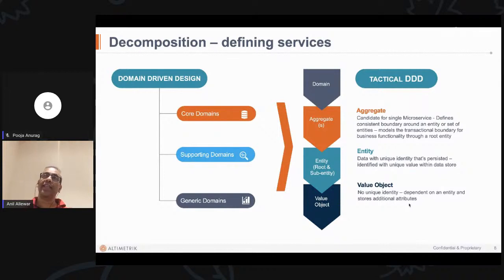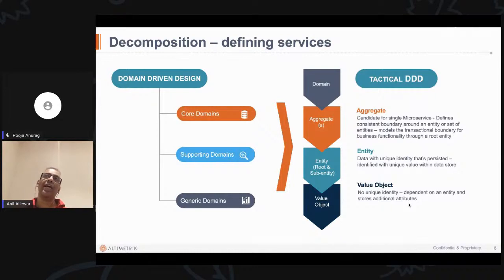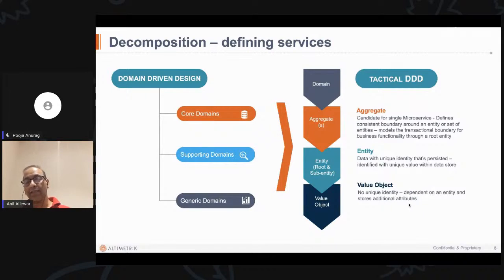You basically take a user — he would have accounts, and then you would have maybe his preferences, and all of that. At that broad level, a user is what you are tracking; that is what your entity would be. Then you would have other entities that fall under it. Within tactical domain-driven design, we call them a root entity and then child entities.